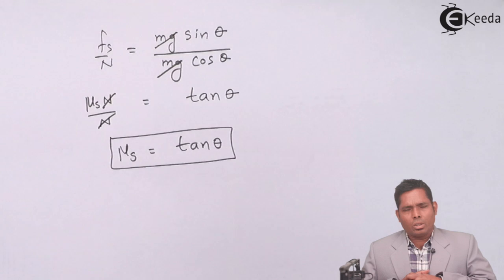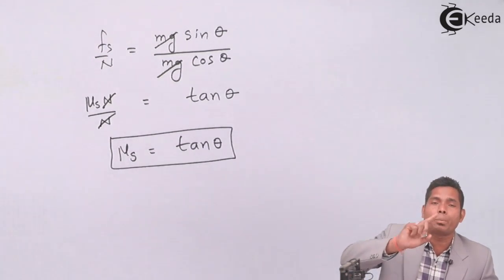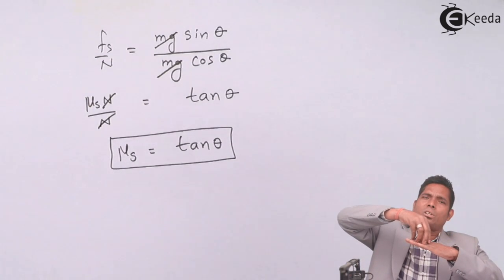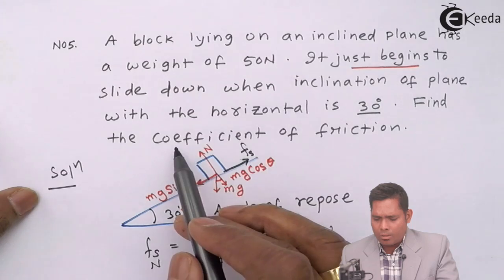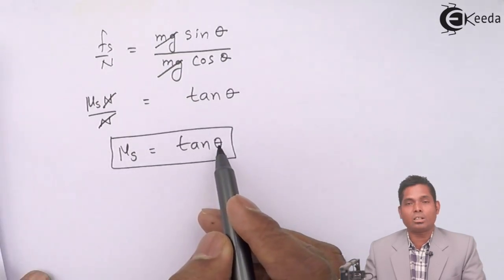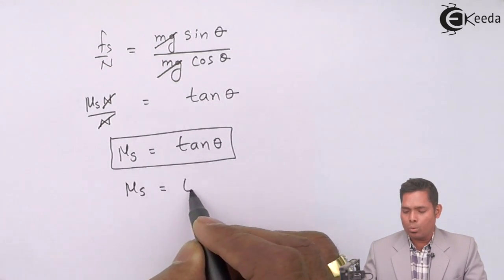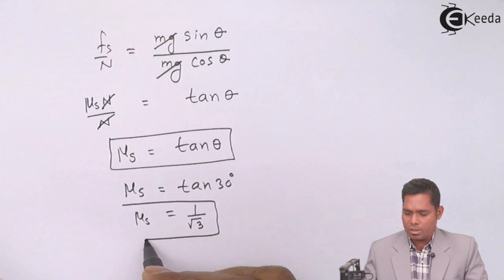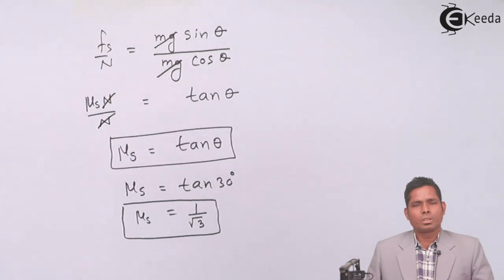This means the coefficient of static friction equals the tangent of the angle of repose — the angle at which the block placed on the inclined surface just starts moving down. In this question, we are asked to find the coefficient of static friction. Using μs = tan θ with θ = 30 degrees, we get μs = tan 30° = 1/√3. This is the answer.